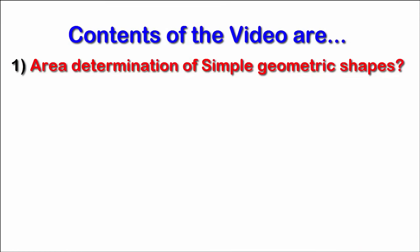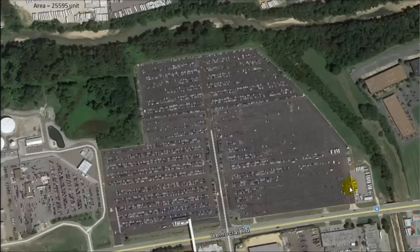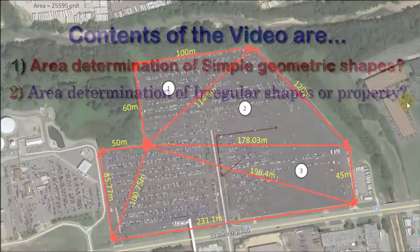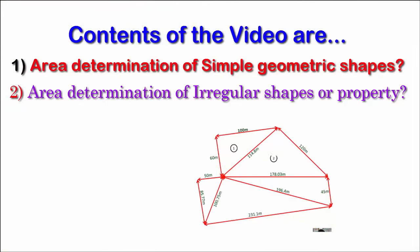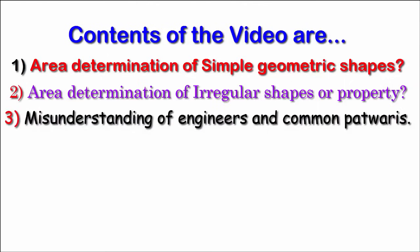The main goal is to determine area of irregular shapes like irregular rectangles, or in short, irregular polygons, because everything is a polygon when it comes to area determination except shapes having curves. The next thing I want to explain is the misunderstanding of engineers and common pathways.